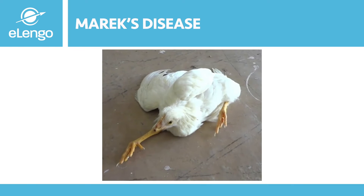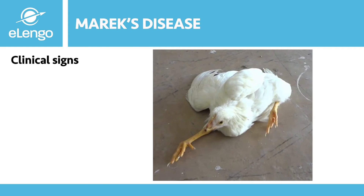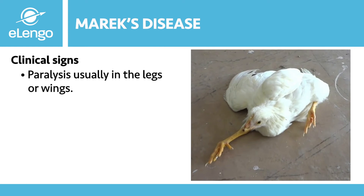The next disease we are going to look at is Marek's disease. Marek's disease is also a viral disease of chicken that mostly affects the nervous system. The birds show signs of progressive paralysis, usually in the legs or the wings. Often the birds look like they are doing splits — you'll notice one leg dragging behind, or both legs paralyzed and pointing in opposite directions, as you can see on our diagram.